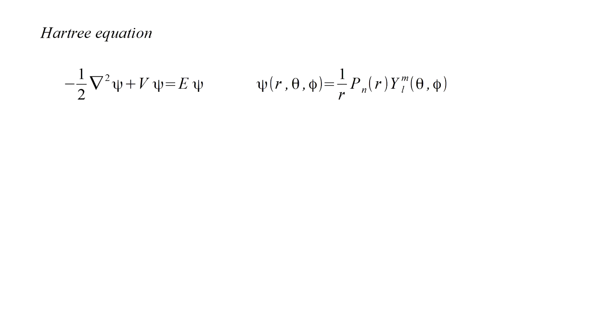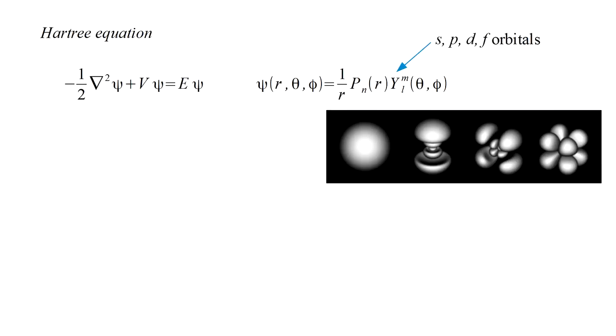The quantum number n will be associated with the radial function. The quantum numbers L and M are associated with the angular function. This part specifies the angular variations associated with the s, p, d, and f orbitals.